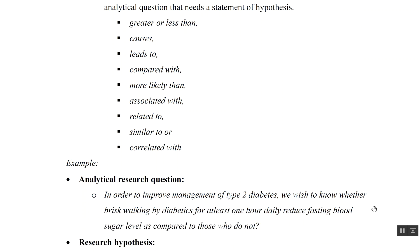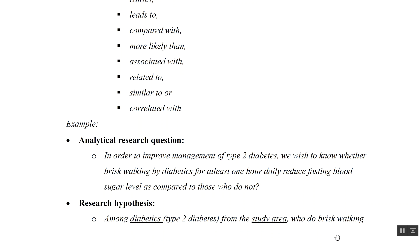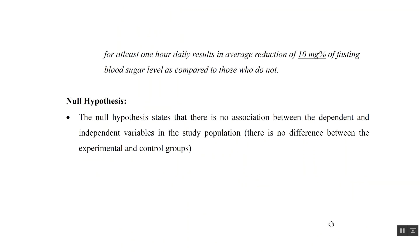For example, an analytical research question: in order to improve management of type two diabetes, we wish to know whether brisk walking by diabetics for at least one hour daily reduces fasting blood sugar level as compared to those who do not. The research hypothesis would be: among diabetics with type two diabetes from the study area, those who do brisk walking for at least one hour daily result in an average reduction of 10 milligram percentage of fasting blood sugar level as compared to those who do not.